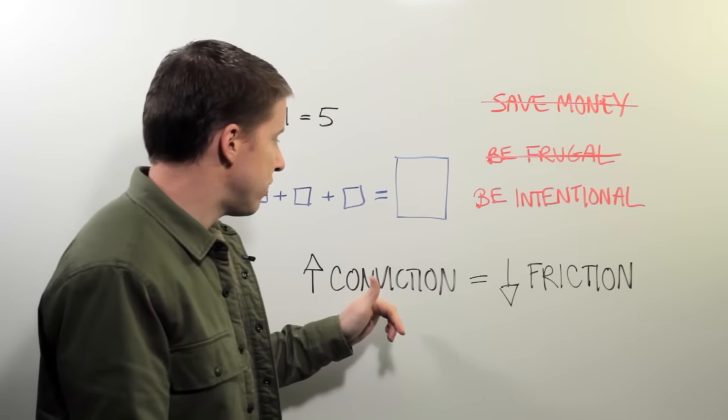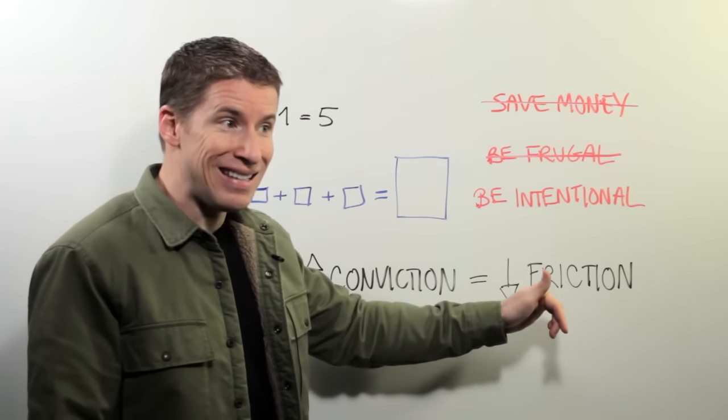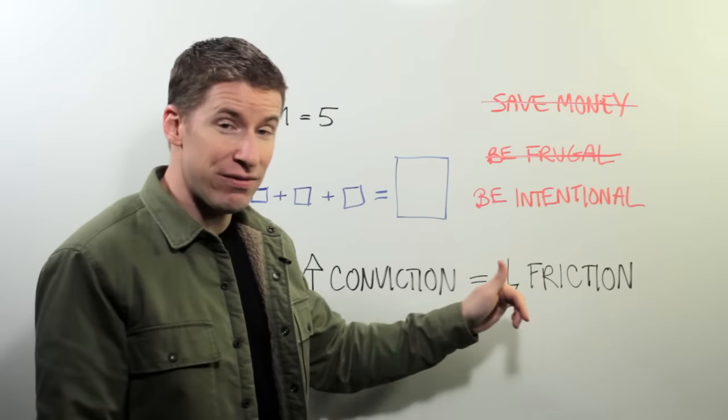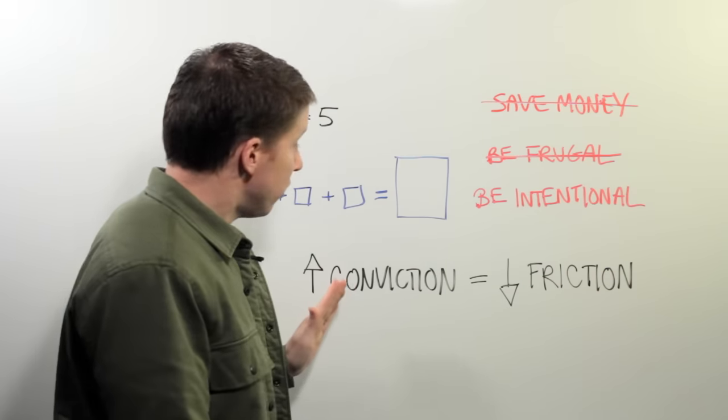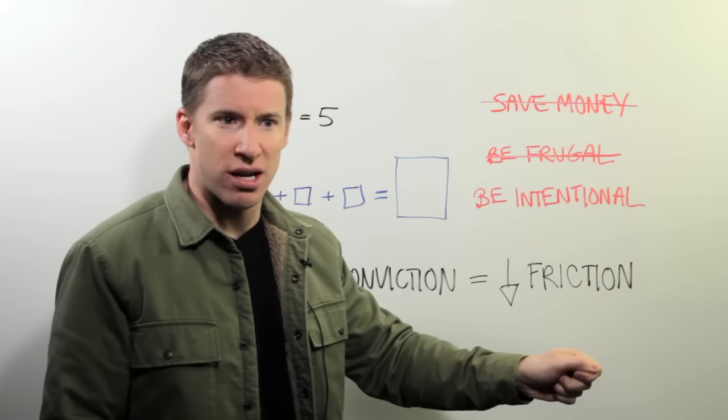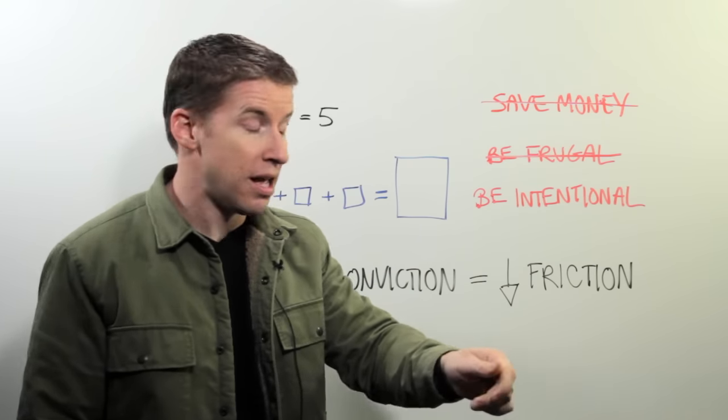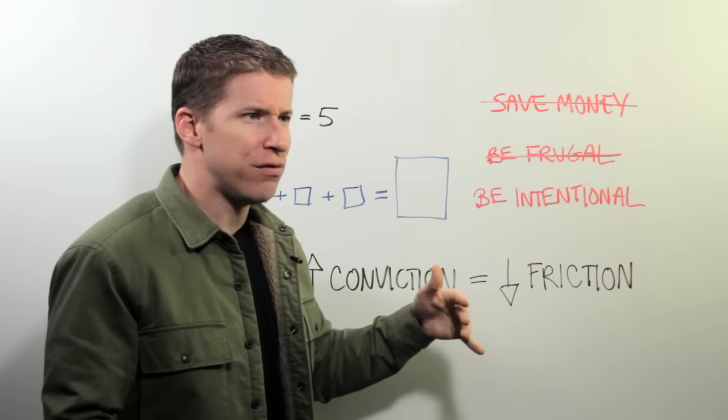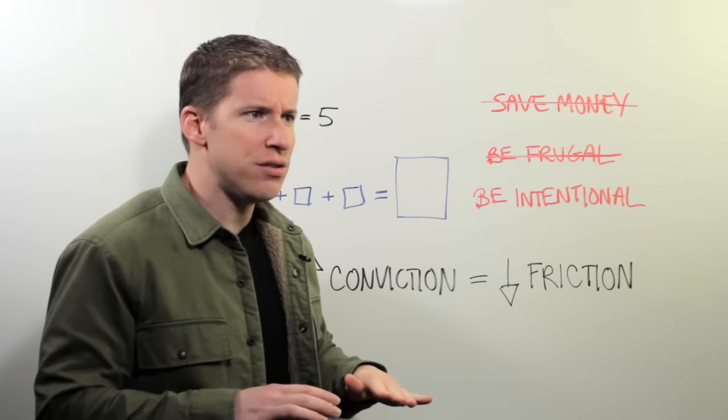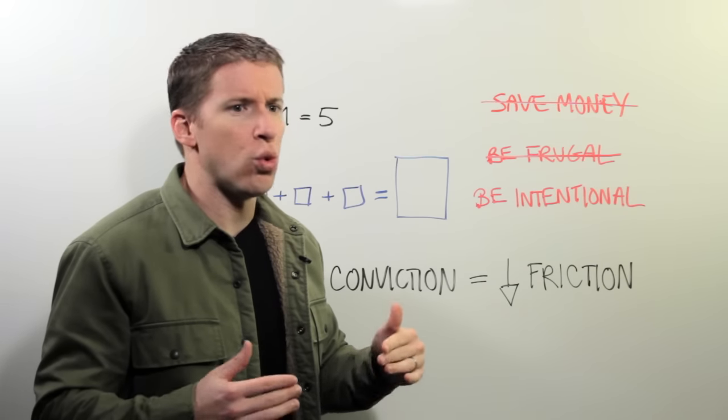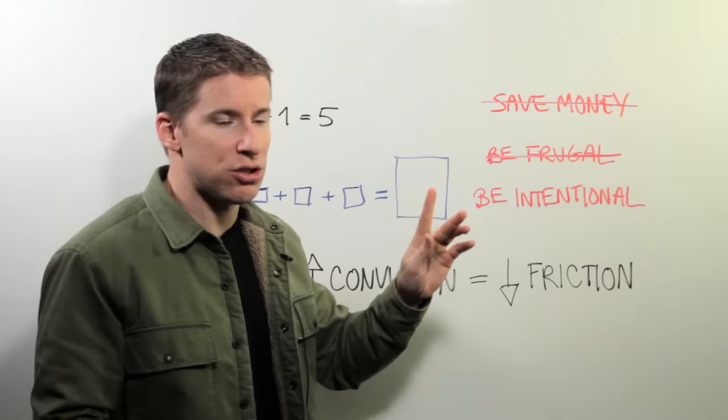At the end of the day, we want to increase your conviction and decrease your friction. And I didn't even spend a long time thinking about that. That just rhymed out of the gate. So increasing conviction, meaning I love spending my money here, I love doing this thing with my money, will decrease the friction of you just having this kind of low level uncertainty friction around what your money is doing.